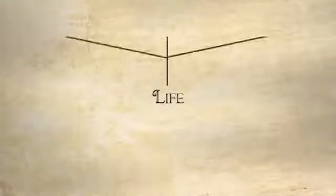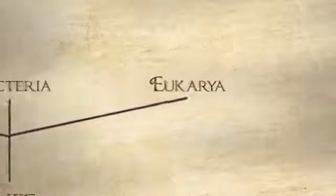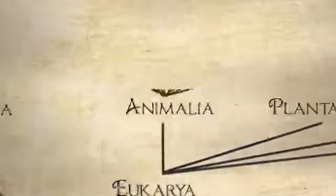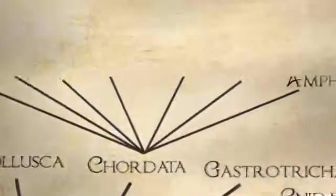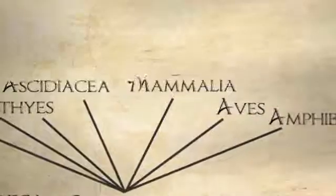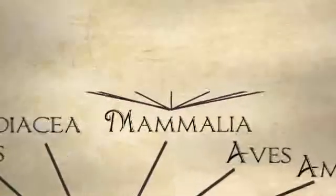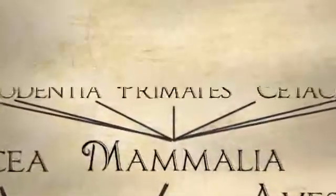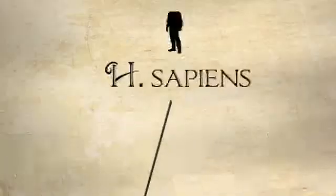Today, this system is a nested hierarchy of classification into which all organisms fit. As an example, let's use mammals. All mammals are grouped together in the class Mammalia. They're then divided up into increasingly smaller groups called orders, families, genera, and then species.